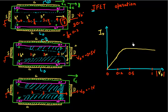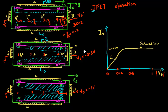So I get an IV characteristic that initially shows a linear regime, and then a saturation regime where current stays constant. In the next video I'll describe the IV relationship more mathematically. The field in the y direction drives the current, and there are two junctions — that's why it's called a Junction Field Effect Transistor.